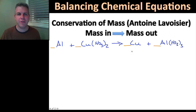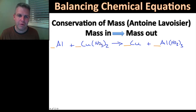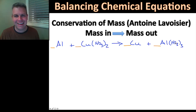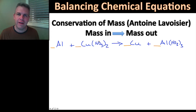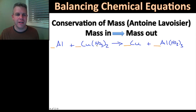Aluminum: one aluminum on this side, one aluminum on that side. Copper: one copper on this side, one copper on that side — so far so good. When you get to polyatomic ions, this two in Cu(NO₃)₂ means I have two nitrogens and six oxygens here, while on the other side I have three nitrogens and nine oxygens. I can balance the nitrates, or I can treat nitrogen and oxygen separately. I'm going to balance the nitrogen.